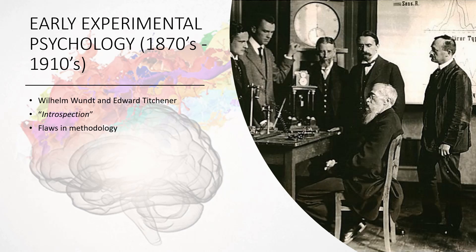Wundt and Titchener would make people do this and record everything that happened in their conscious minds, meticulously training these people so it could be as objective as possible. This method of research was heavily influential for many years, but it gradually became obvious that it was quite flawed, because unconscious processes also had a huge role to play in behavior — something that is known now more than any time in history.